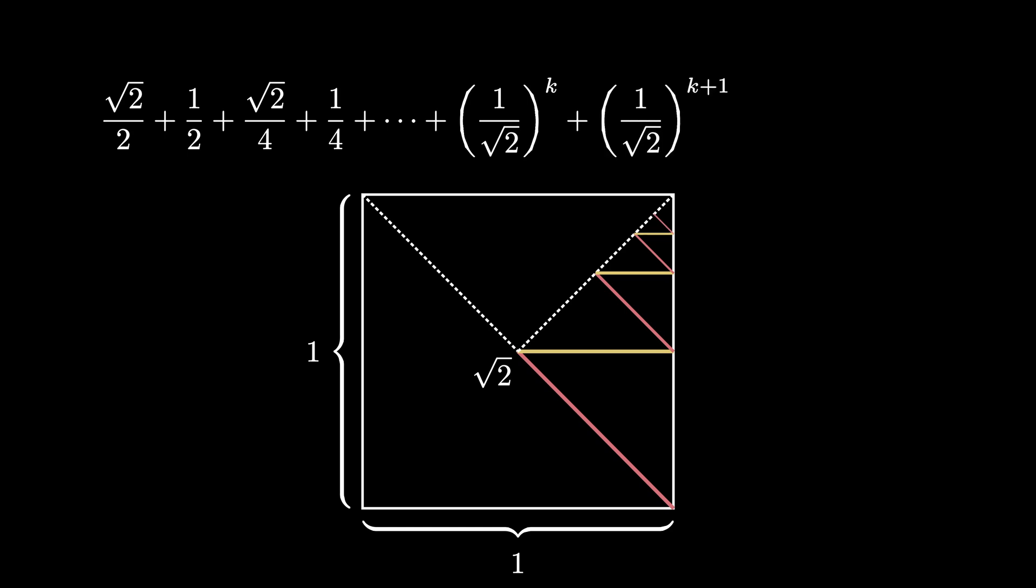Along the way, each of these line segments has a length of size 1 over root 2 raised to the k, where k is some integer starting at 1 and going on forever.